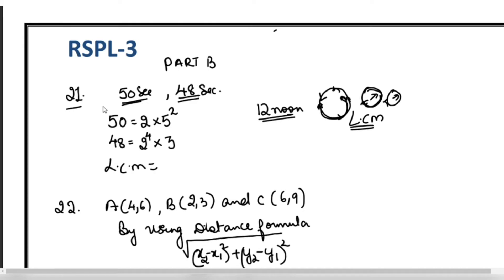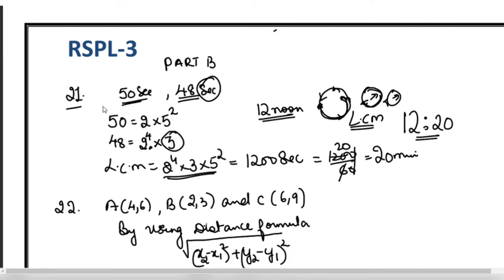For LCM we have 2 here, 2 here both. Higher degree into 3, common thing one time, rest all should be multiplied. This all will be 1200 seconds. Convert it into minutes: 1200 divided by 60 equals 20 minutes. That means after 20 minutes, at 12:20 PM, they will beep again.